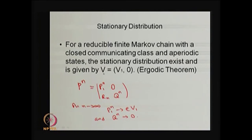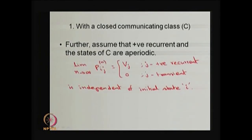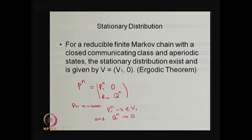Therefore, the stationary distribution vector V consists of zero elements corresponding to transient states — since the long-run proportion of time in transient states is zero — and V1 gives the stationary state probabilities in the long run for the closed communicating class of states. This can be solved using the equation π·P = π, where π corresponds to V1 in this notation.